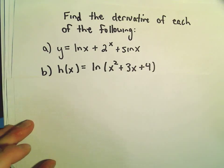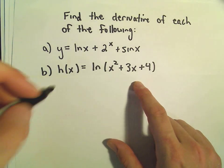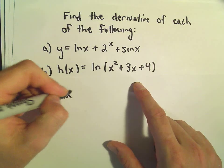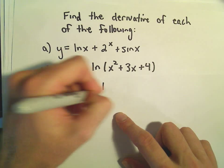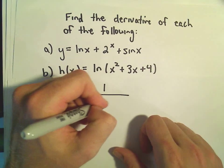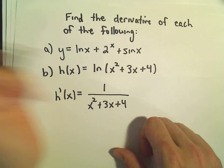So here we have h of x equals ln of x squared plus 3x plus 4. Well, if we take the derivative, we get 1 over the stuff, so x squared plus 3x plus 4.